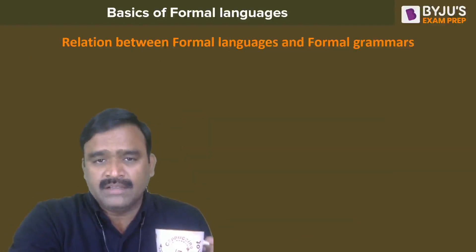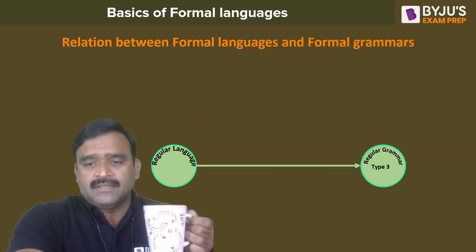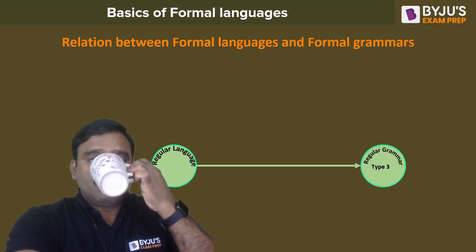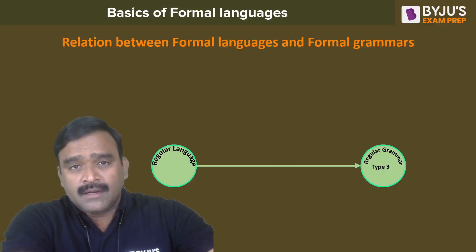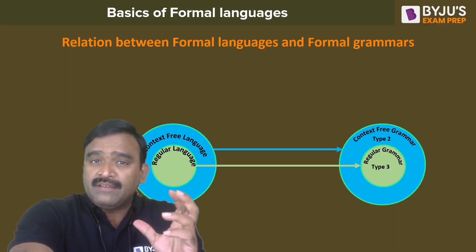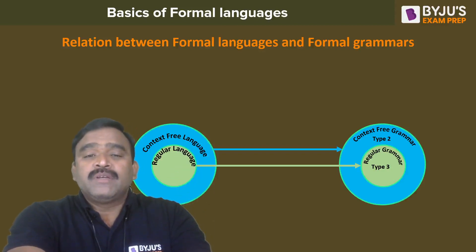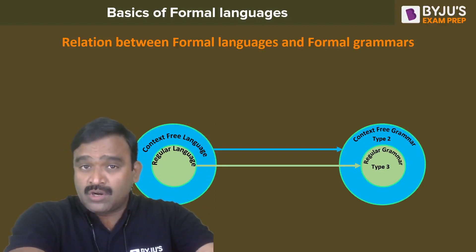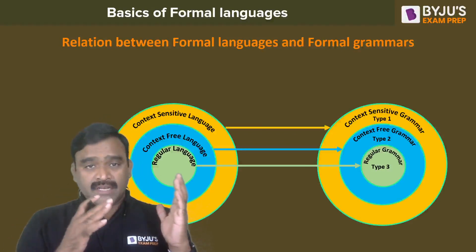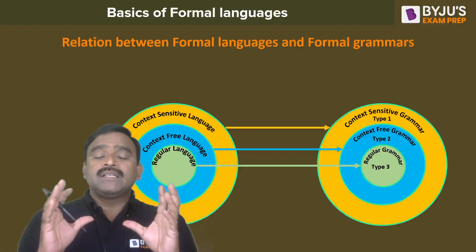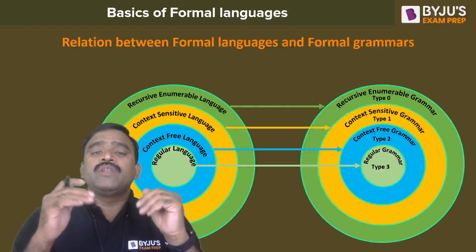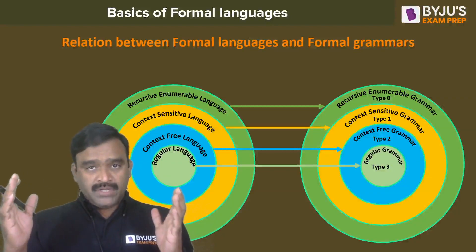Regular languages are related to regular grammar, which is called Type 3 grammar. Context-free languages are recognized by context-free grammar, with pushdown automata as their machine counterpart. Context-sensitive languages are recognized by context-sensitive grammar and linear bounded automata. Recursively enumerable languages are recognized by the Turing machine and are called Type 0.